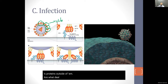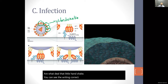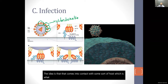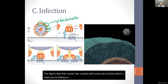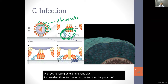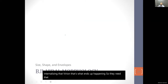Those proteins outside the virus come into contact with the host, which is what you see on the right-hand side, and when those two come into contact, the process of internalizing that virion is what ends up happening — they need that physical contact.